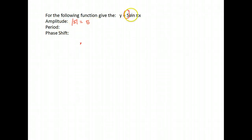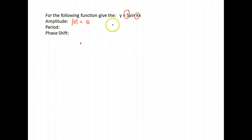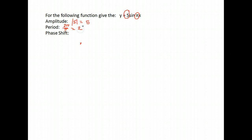For the period, you take the number multiplied in front of your x and take 2π divided by that number. So our period is going to be 2π divided by π. That gives us a period of length 2 instead of 2π.